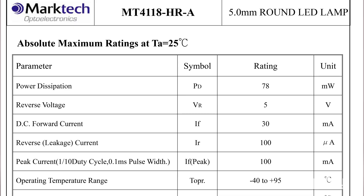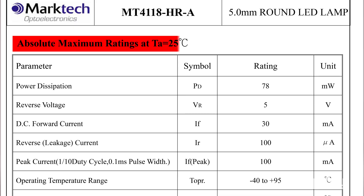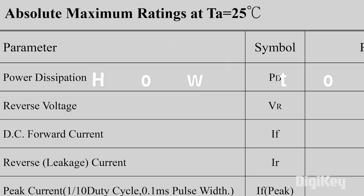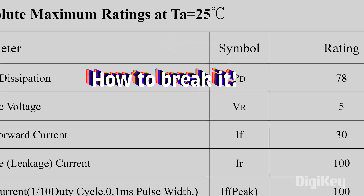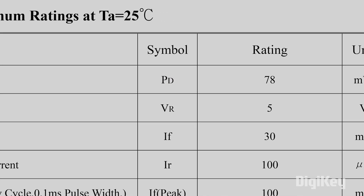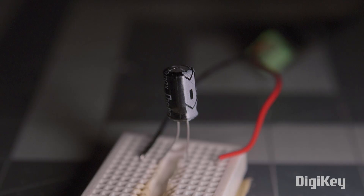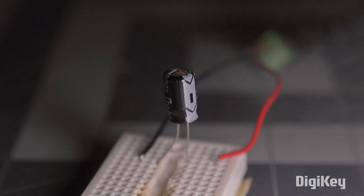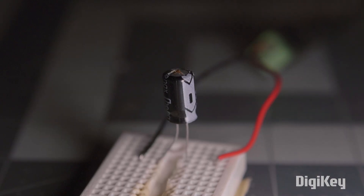One of the most important sections you'll run into is called the absolute maximum ratings — it's basically the do-not-exceed list for your component. These are the limits the manufacturer says the part can withstand without immediate damage, like the highest voltage or temperature it can handle. But these are not the recommended values for normal use — they're the danger zone. You can't design a circuit to operate at these max values and expect your component to hold up long term. These are the values that risk letting out the magic blue smoke, so treat this section as a warning label.